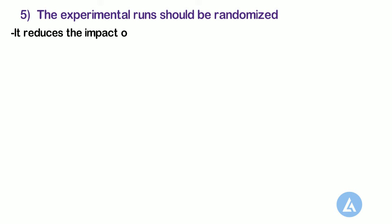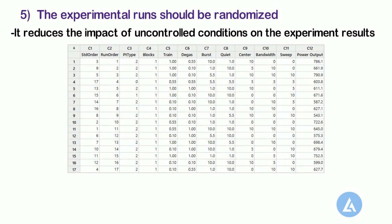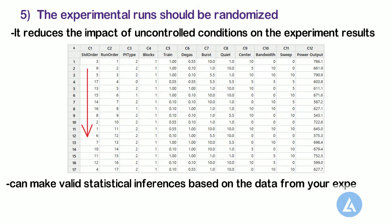Fifth, the experimental run should be randomized. Randomization reduces the impact of uncontrolled conditions on the experiment results. Randomization also lets you estimate the inherent variation in materials and conditions so that you can make valid statistical inferences based on the data from your experiment.